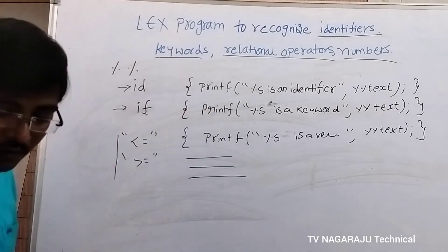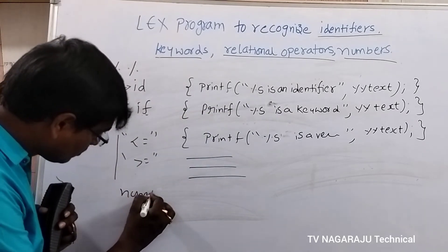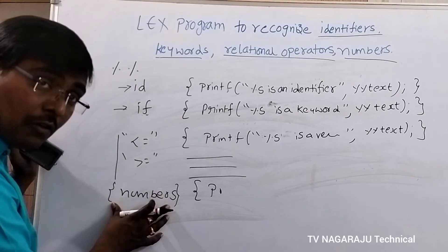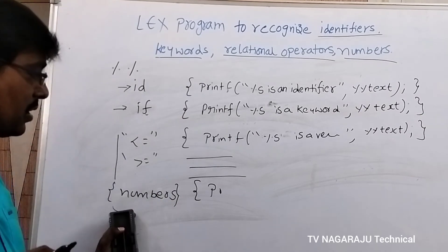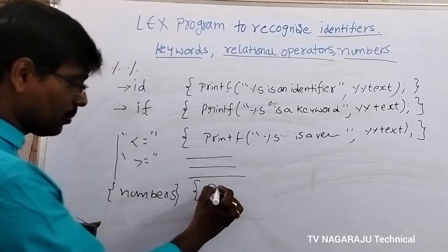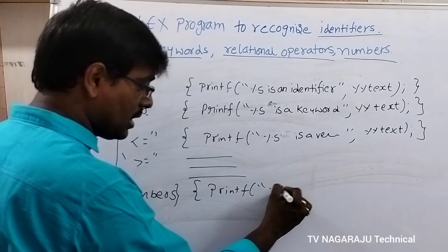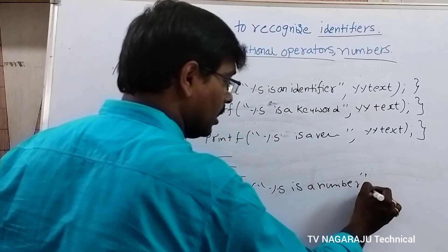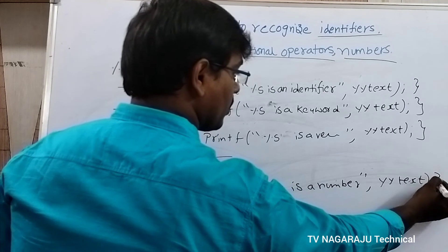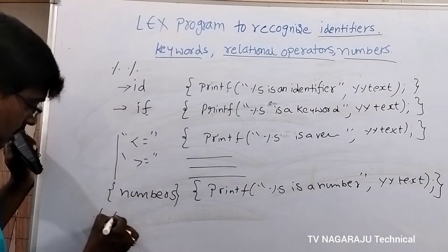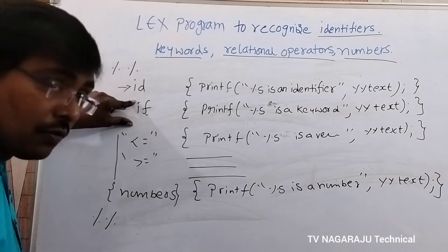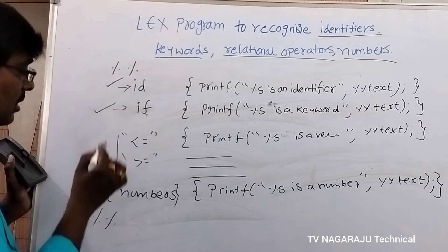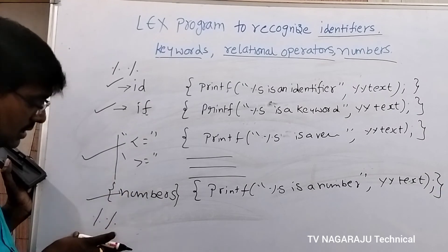Finally for numbers, the pattern can optionally be specified in curly brackets — this is optional. The action is: printf("%s is a number", yytext); Remember, even though the number is an integer or float, it is represented in string format only via yytext. So identifier, keywords, relational operators, and numbers are all recognized. This completes the transition rules section.